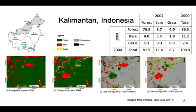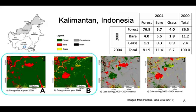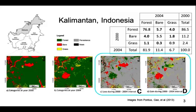For a case study, we examine land cover change in Kalimantan, Indonesia. The map in the upper left shows the location of the study site. Maps A and B show land cover for the years 2000 and 2004 respectively. Maps C and D show the losing and gaining categories respectively, with persistence in gray. This video focuses on the dynamics of the first category, which here is forest.